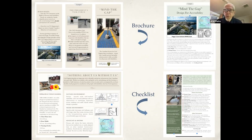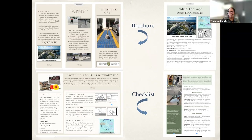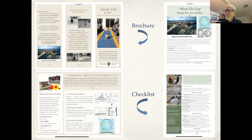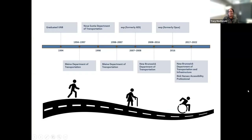I'd like to turn it over to Tracy and let her walk through her journey. Thanks, Alan. So just a little bit more about me. I graduated from the University of New Brunswick as well — go red and black, as Alan said. In 1994, I was a varsity athlete at university doing an engineering degree. I had no concept of accessible design because I was very physically able.